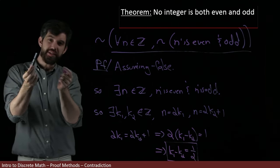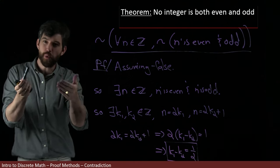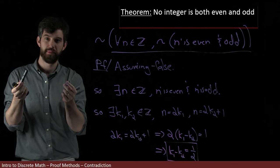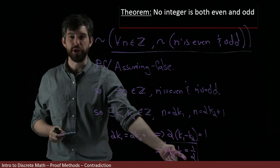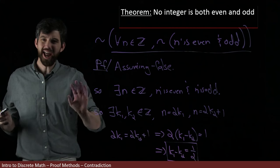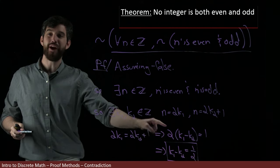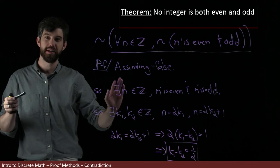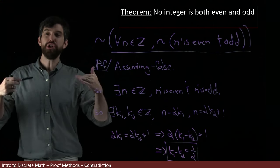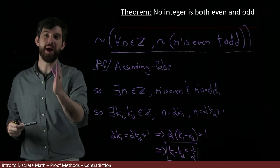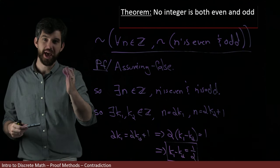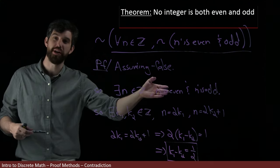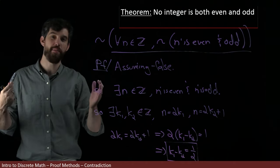And then the difference of two integers is likewise an integer. So k1 minus k2 is going to be an integer. But I just showed you that k1 minus k2 is not an integer. It's a fraction. It is 1 half. It is a rational number that is not an integer. So I've got two different claims that are contradictory. I've got the claim k1 minus k2 is an integer. And I've got the claim k1 minus k2 is equal to this fraction 1 half.